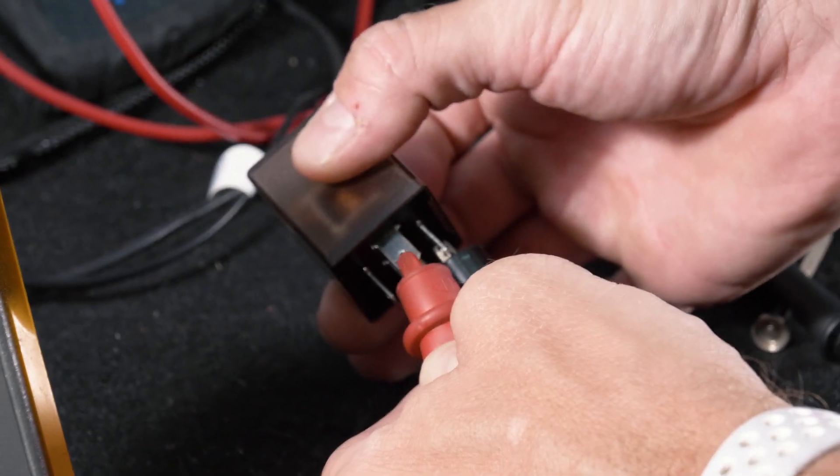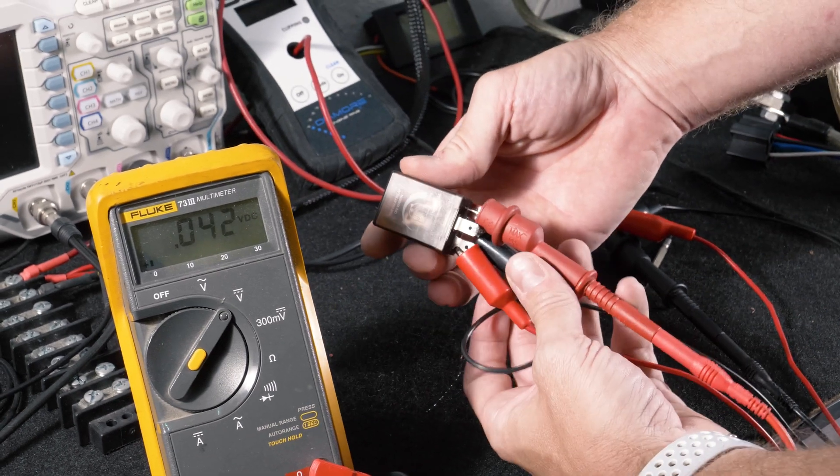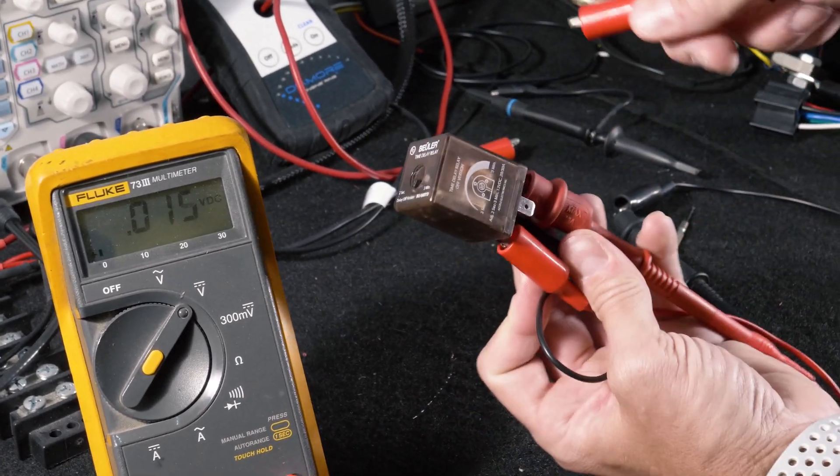Now what we'll do for demonstration purposes is put it on a normally open contact, trigger the relay, and you'll get to see the voltmeter.